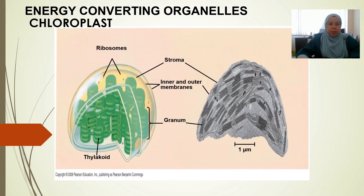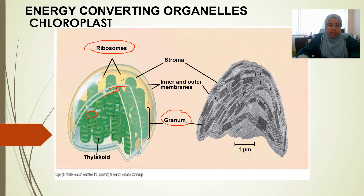The figure shows a chloroplast. The gray structures are thylakoids, and a stack of thylakoids is called a granum. Inside the double membrane — the outer membrane and inner membrane — there is an internal fluid called the stroma. The stroma contains enzymes and ribosomes. Between the outer and inner membrane is the intermembrane space.